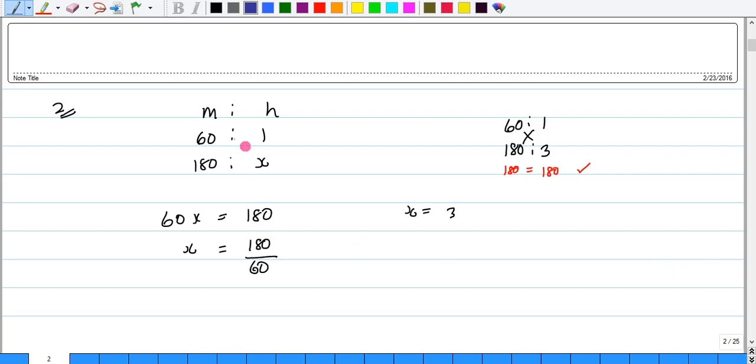Okay, so let's look at the ratio of minutes to hours. 60 minutes make one hour. If we have 180 minutes, what would be the number of hours that would be?